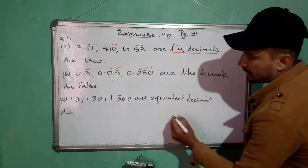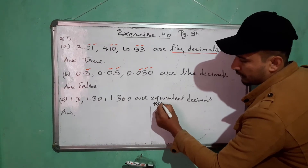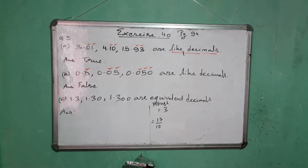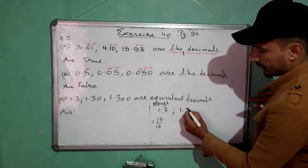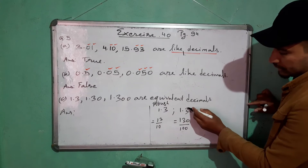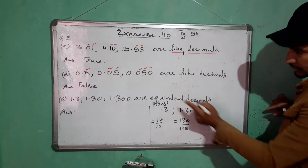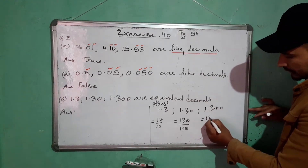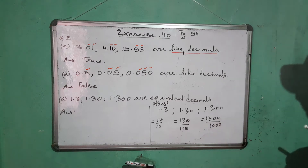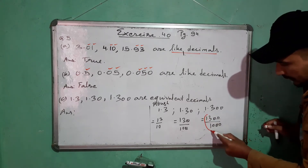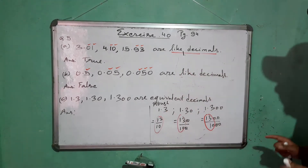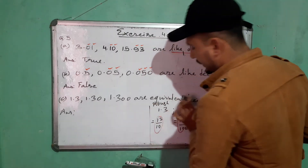Let's check if these decimals have the same numerical value. 1.3 = 13/10. Next, 1.30 = 130/100; the zeros cancel, giving 13/10. Next, 1.300 = 1300/1000; two zeros cancel, giving 13/10. All three equal 13/10, meaning they have the same numerical value. Hence they are equivalent decimals. Statement is True.